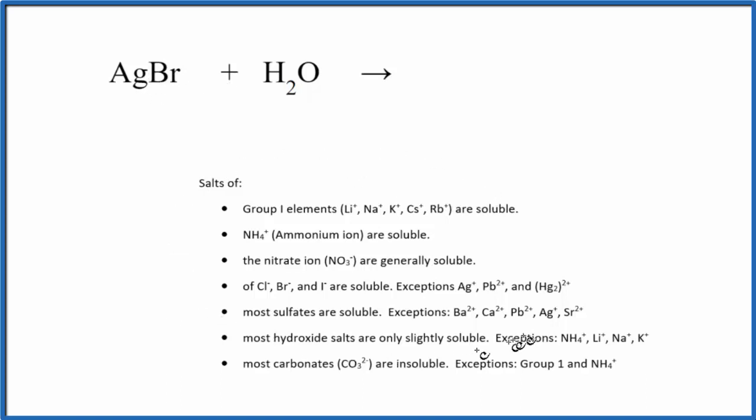So these are some general solubility rules and I can see down here that these halogens, bromine here, they're soluble with just a few exceptions.